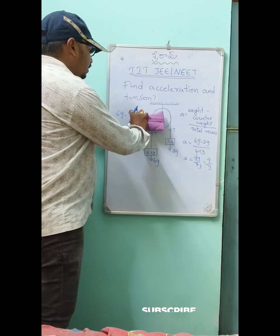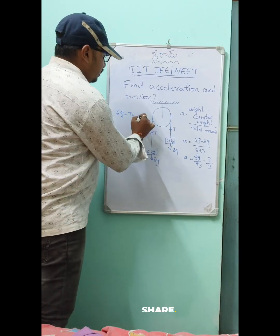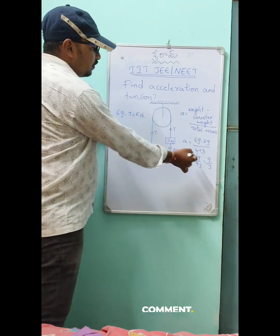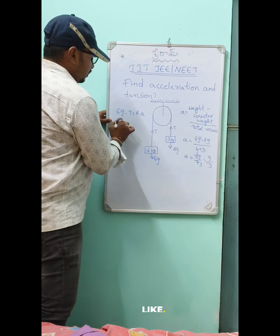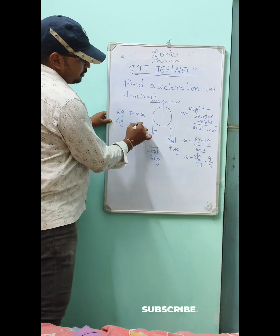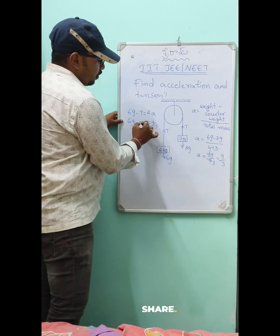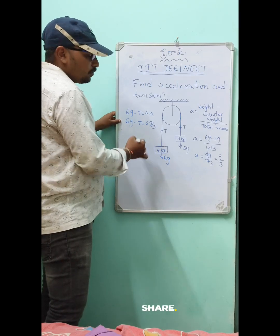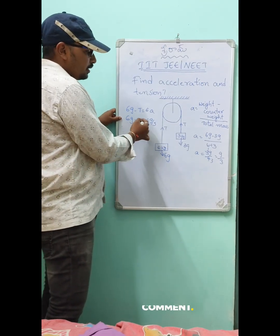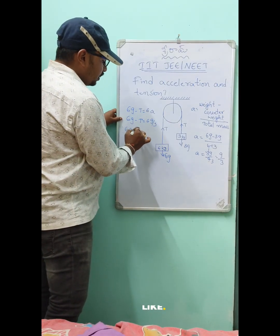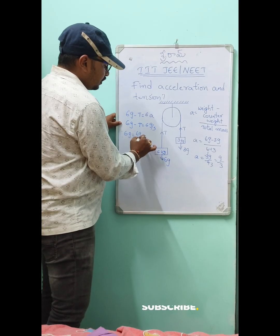The mass m here is 6, and the acceleration a value we got is g by 3. So 6g minus t equals 6g by 3. To find the tension, when rearranged, t equals 6g minus 6g by 3.